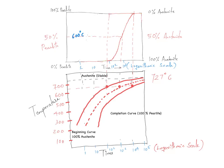The driving force to create this type of diagram is that we need to capture the temperature-time dependence together in one figure. To get this dependence, we have to draw curves for every temperature. By repeating the thought experiment for many temperatures, we can assimilate all this information into one particular figure: the isothermal transformation diagram.